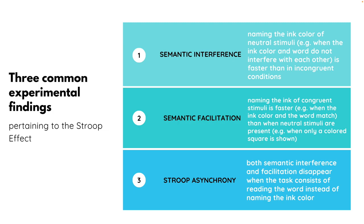The third finding pertains to a concept called Stroop asynchrony. It is both a combination of semantic interference and facilitation disappearance when the task consists of reading the word instead of naming the ink color. This is called Stroop asynchrony and has been explained by reduced automatization when naming the color compared to reading the words.